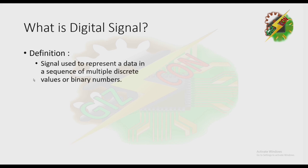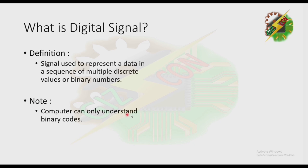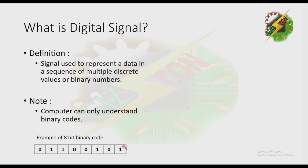Now let's discuss what is a Digital Signal. A Digital Signal is the signal used to represent data in a sequence of multiple discrete values or binary numbers. Take note: computers can only understand binary codes.